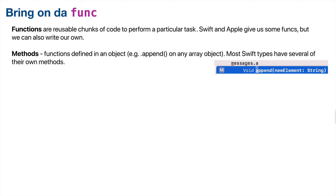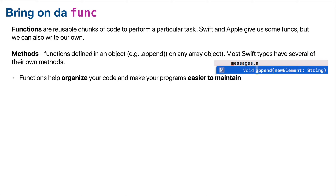You might find it useful to think of functions as the verbs in your program — do this code when a button is pressed, or do this code when the name of the function appears. Functions are hugely helpful, one of the most important concepts in computer science. They help us organize our code and make it easier to maintain. If you've got a chunk of code that does one thing, all maintenance happens in that one place. Functions make our code reusable so instead of repeating ourselves we just call a function, making our program smaller and more efficient.